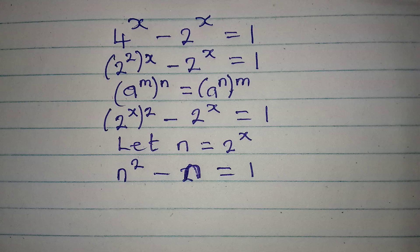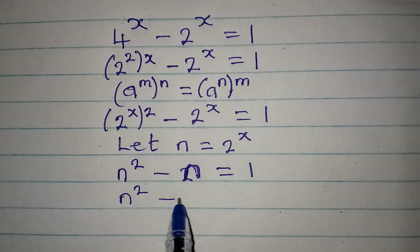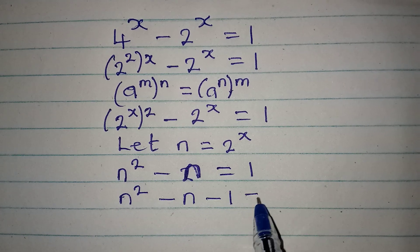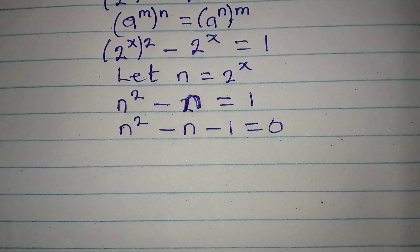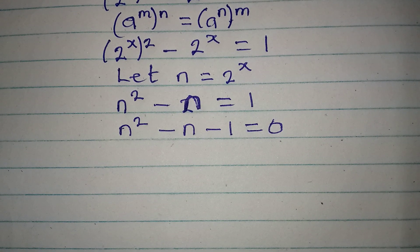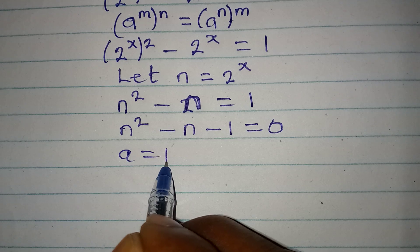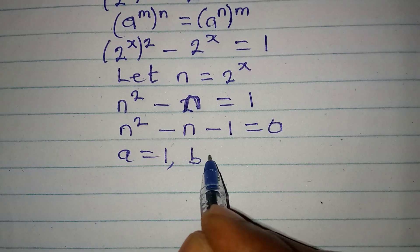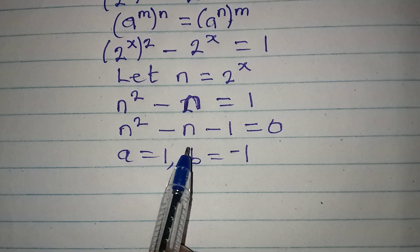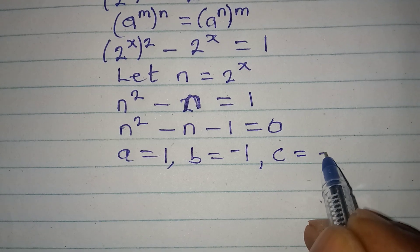This is equal to 1. The next target is to bring 1 to the left, so we have n squared minus n minus 1 equals 0. And this is now quadratic. So we can use the formula method to solve this. Our a will be 1 — the coefficient of n squared. Our b will be minus 1 — the coefficient of n. And c is minus 1.